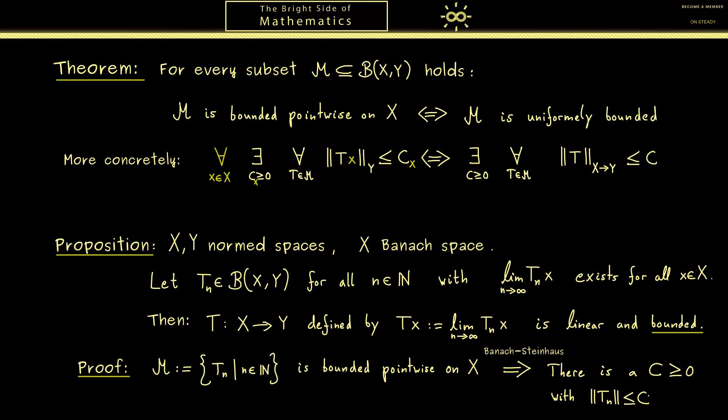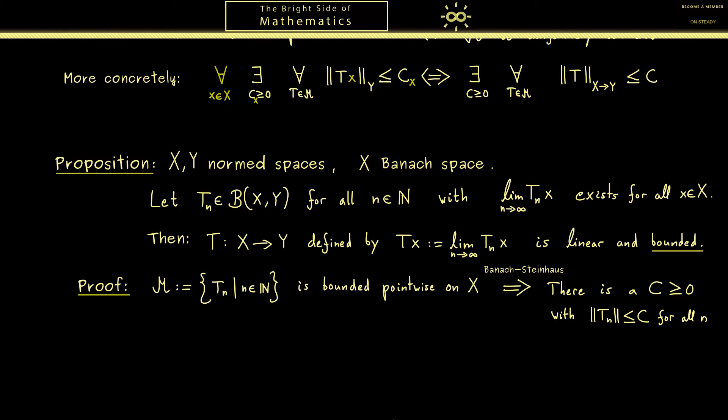Now let's do the last step calculating the operator norm of T. By definition this is just a supremum where we put in x with norm 1. Okay here we can simply use the definition of Tx which is the limit T_n x. The norm is a continuous map so we can pull out the limit.